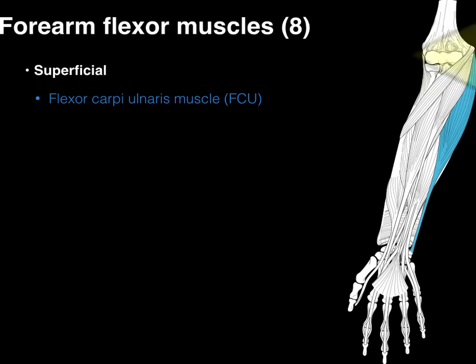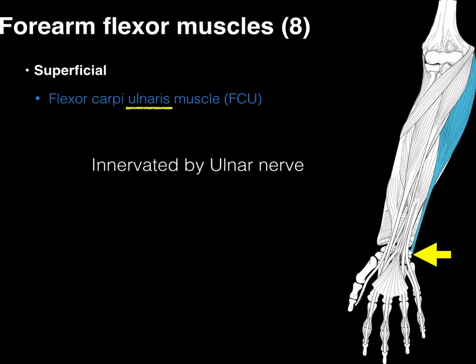The flexor carpi ulnaris comes from the medial epicondyle and goes down to the carpus, specifically the pisiform and base of the fifth metacarpal, and it also flexes the wrist. This is the only forearm flexor with 'ulna' in its name, and it is one of the prime muscles innervated by the ulnar nerve.